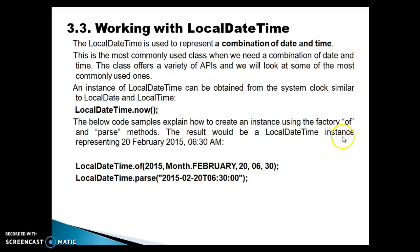The result would be a LocalDateTime instance representing 20 February 2015 at 6:30. Here we can make use of the of() method. First you need to pass the year, then the month. To specify the month, you can use the ordinal value — for example, February is 2 — but you can also use the Month enumeration. All months are declared in the Month enumeration. Finally, you pass the day, the number of hours, and the number of minutes. This is how you can create an object of LocalDateTime.